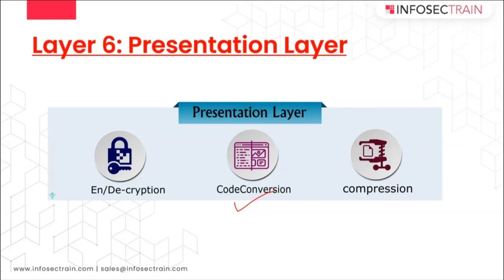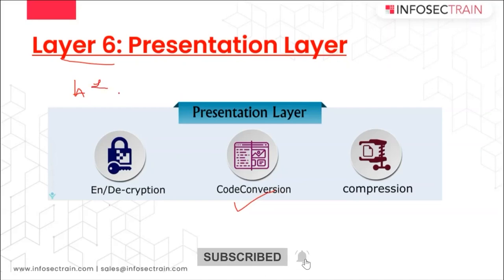In the Presentation Layer, the Application Layer above it always sends data in the form of alphabets or numbers. The Presentation Layer does translation — for example, converting text like 'SKY' to binary. Once translation is done, the next step is data compression. Data compression can be in two formats: lossy and lossless. After translation, compression is done to reduce the overall size of the data. If the data size is reduced, the transfer is easier and faster.